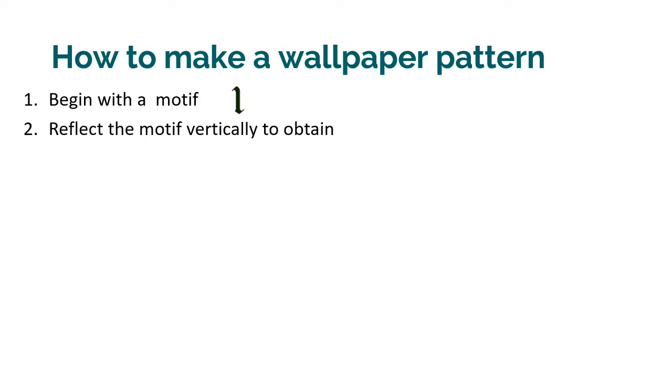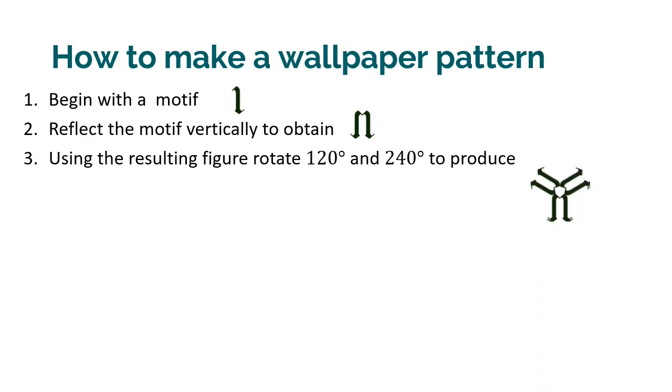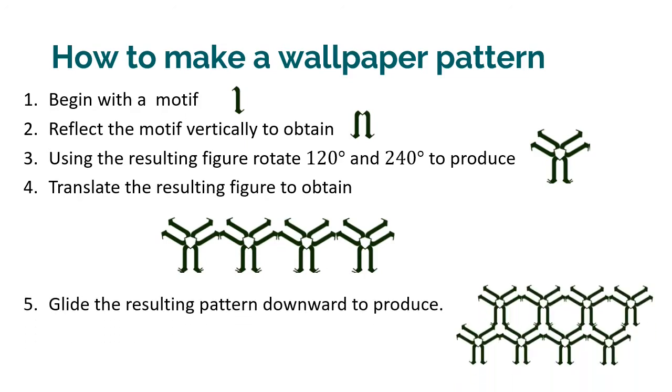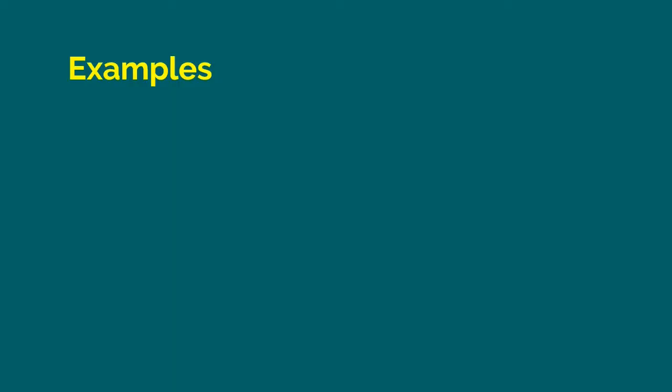In this particular example, we reflect this motif vertically to obtain this. And then using this figure, we rotate it by 120 degrees and 240 degrees to produce this one. And then you now translate this figure. And you glide the resulting pattern to produce this one. And then you just continue doing this until you get a pattern.